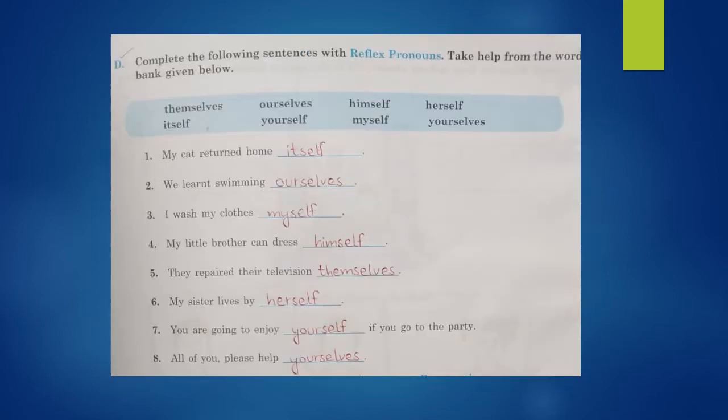Now open page number 35 of your workbook — Exercise D. Complete the following sentences with reflexive pronouns. Take help from the word bank given below. This exercise is just like Exercise A which we have done. Number one: My cat returned home itself. Number two: We learned swimming ourselves. Number three: I wash my clothes myself.